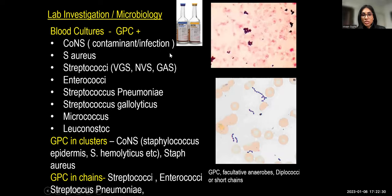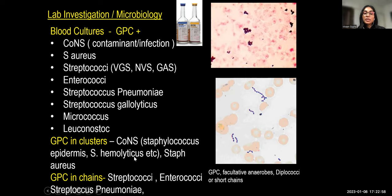When a blood culture is positive for Gram-positive cocci (GPC), the possibilities include coagulase-negative staphylococci, S. aureus, Streptococcus, and Enterococcus. Chains suggest Streptococcus or Enterococcus; clusters suggest S. aureus or CoNS. A single positive blood culture for CoNS is very likely a contamination and should not be treated.